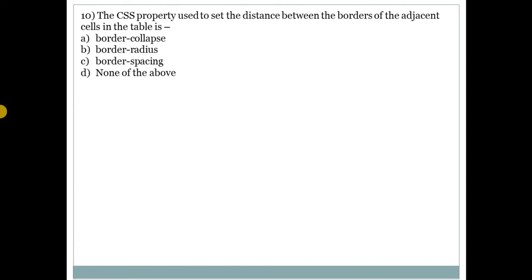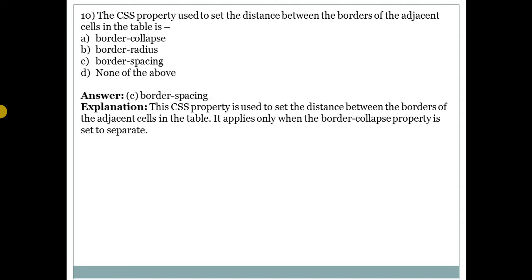Question number 10: the CSS property used to set the distance between the borders of adjacent cells in a table? Answer is C — border-spacing. It is used to set the distance between the borders of adjacent cells in a table, and it applies only when the border-collapse property is set to separate.